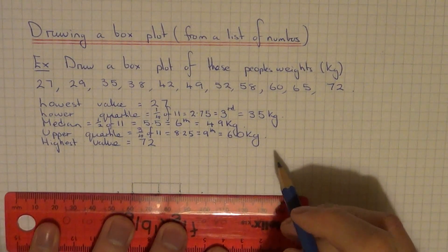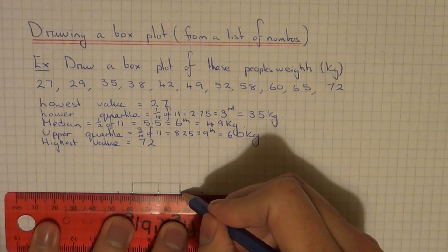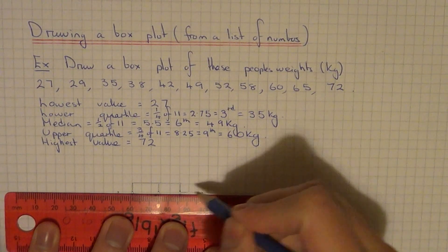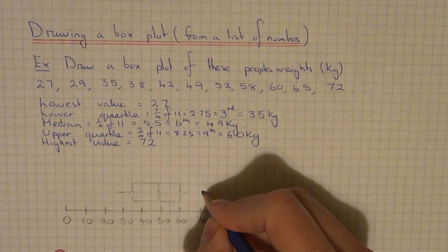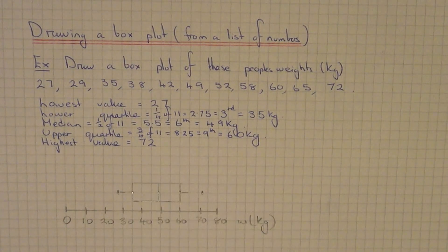Then we just need to do our whiskers, which go from the upper quartile to the highest value and from the lower quartile to the lowest value. And that's our box plot complete. Thanks for watching.